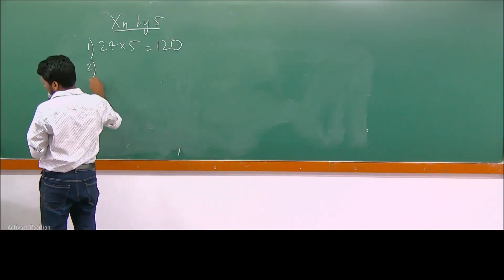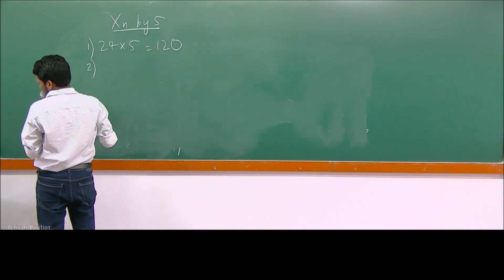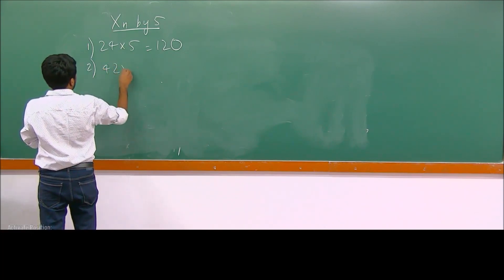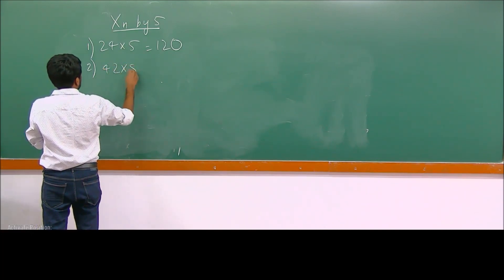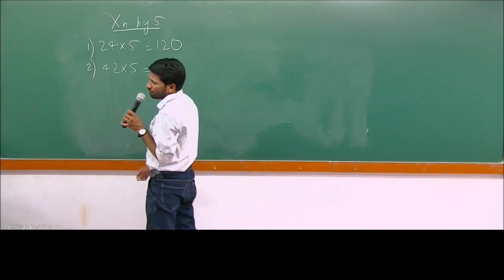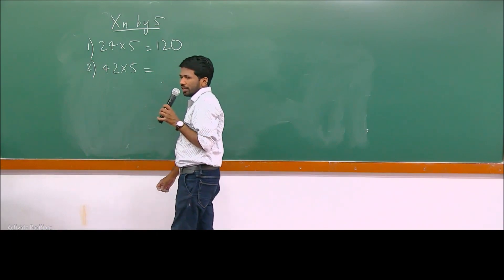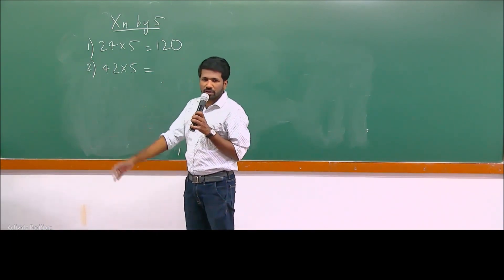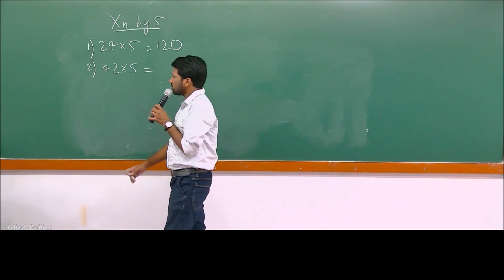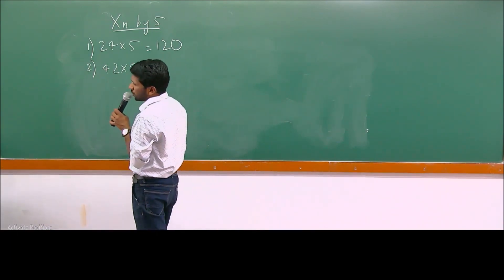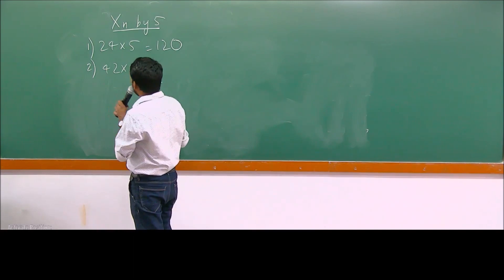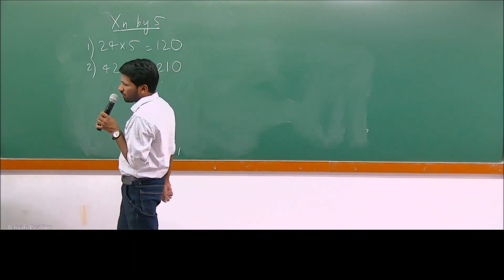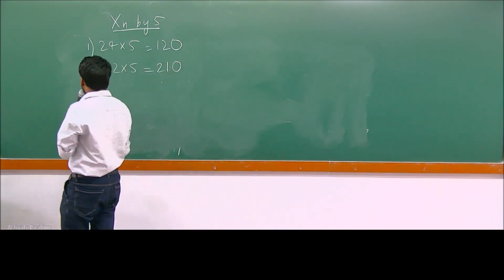Now tell me: 42 into 5, using the same method. Take the half and put a 0 at the end — shift 1 decimal to the right. 42 half is 21, attaching a 0 gives 210. So 42 into 5 is 210.